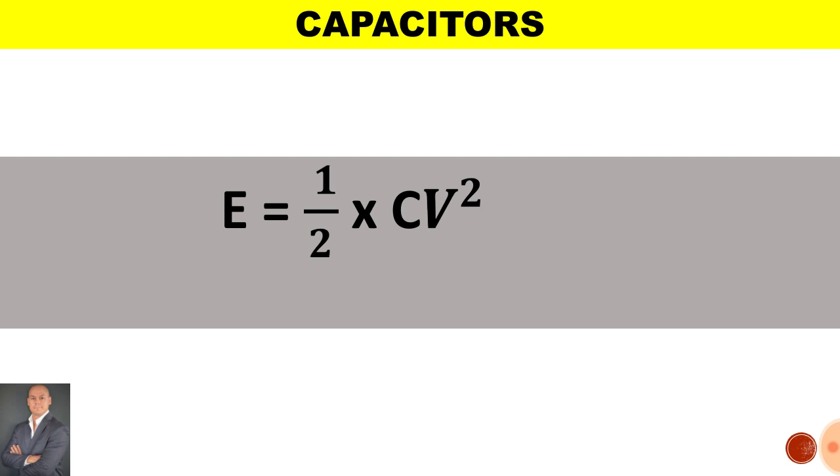In this formula, let's calculate the generated emf. It is a half times the capacitance times the voltage squared. If the capacitance is 100 microfarad which is the same as saying 100 times 10 to the minus 6.